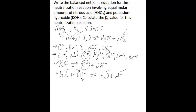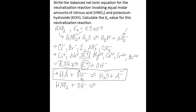In this case, this is the generic form of the net ionic equation when you have a weak acid-strong base type neutralization reaction. To make this more specific to our case, we substitute NO₂⁻ for the HA because that's our weak acid. We have the OH⁻ coming from potassium hydroxide, and you keep the water plus nitrite, which is the conjugate base of our weak acid, generically represented by A⁻.